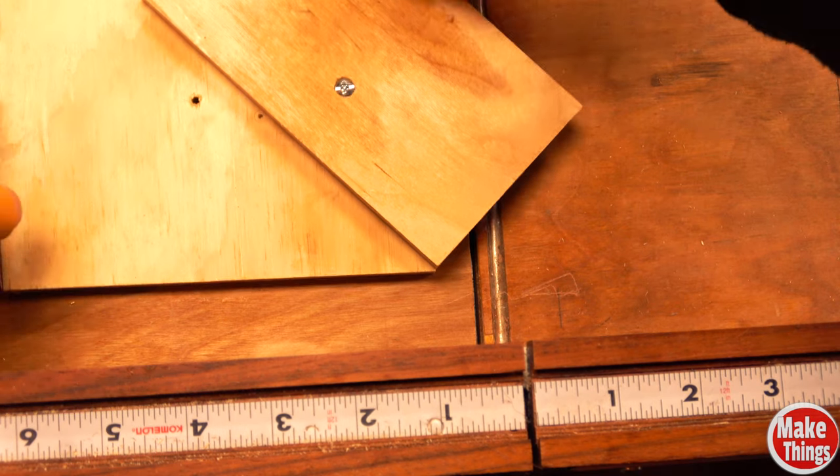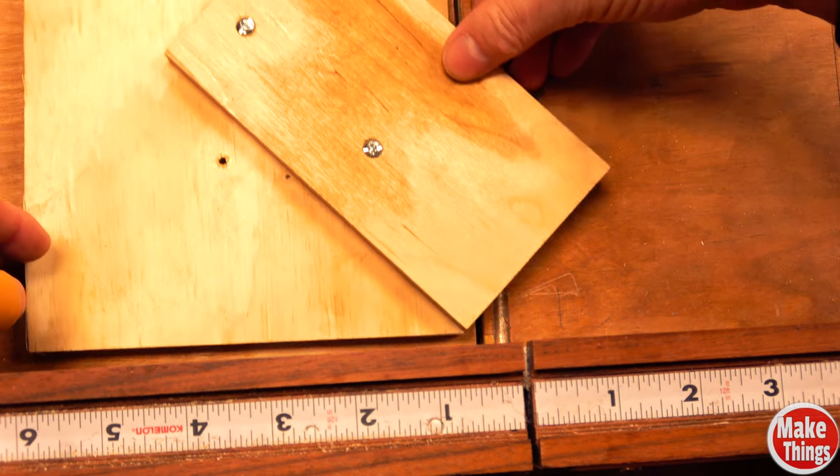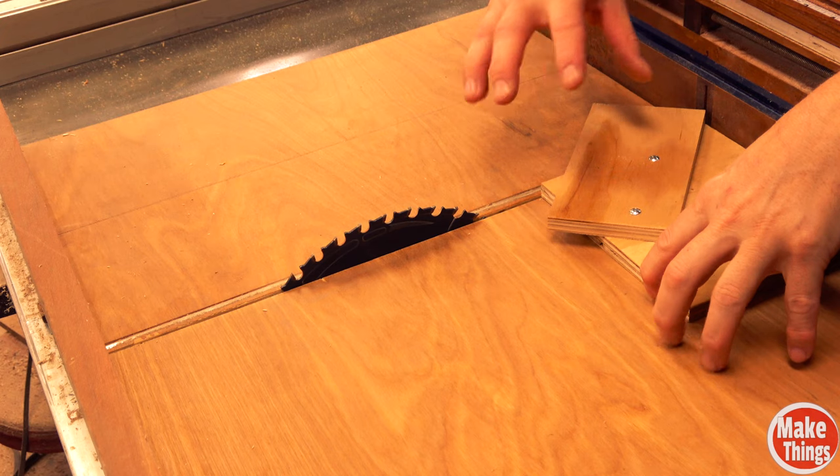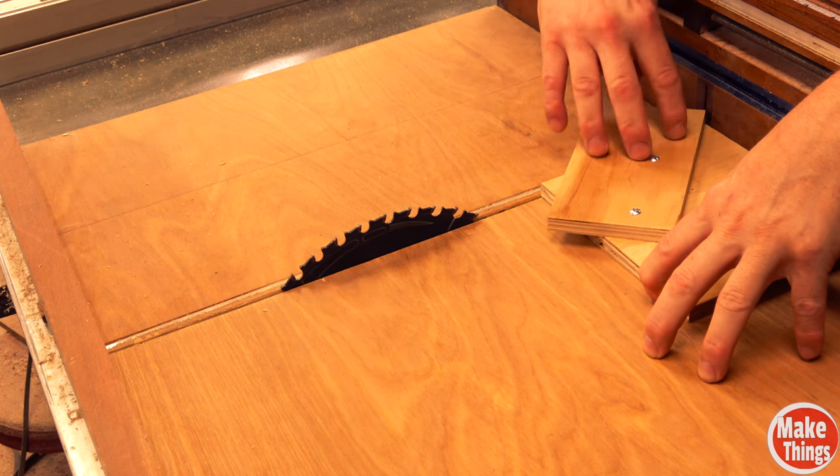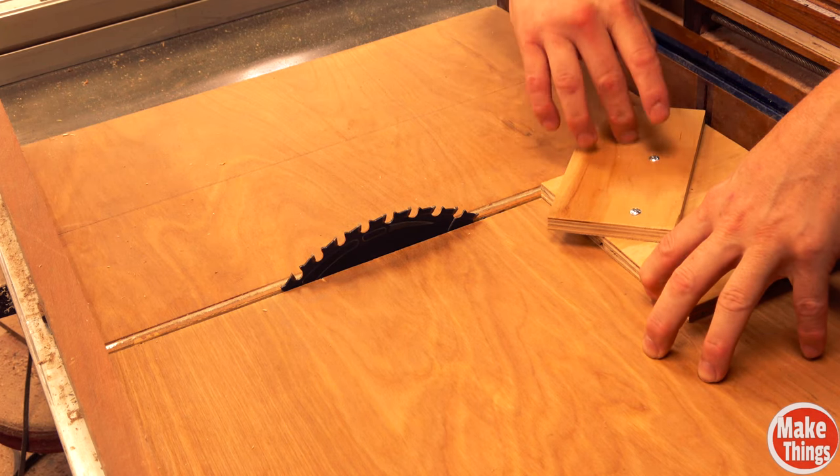Back here at the table saw, we're going to take this edge and line it right up against the cut line on our table saw sled. Once we're on this cut line, we'll go ahead and run this through which will cut this top block here.